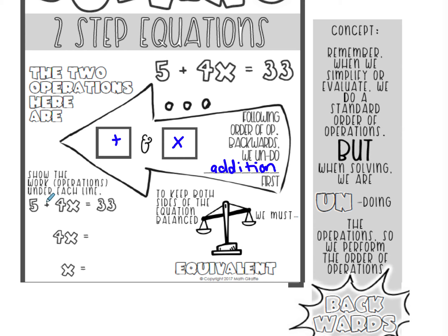First, we're going to get rid of the addition using the inverse operation, which is subtraction. This is a plus 5, so we're getting rid of the number without the letter first. We subtract 5 on both sides of the equation — 5 on one side, 5 on the other — we're not doing anything to the 4x since those aren't like terms. 5 minus 5 is 0, so I'm left with 4x. Then 33 minus 5 is 28.